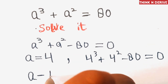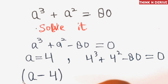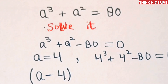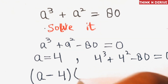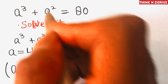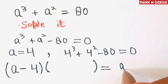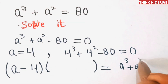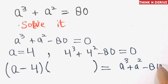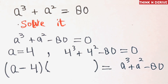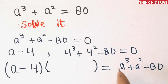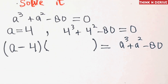Since a = 4 is a solution, (a − 4) is one factor of this equation. Now we need to find the other factor such that when we multiply the two factors we get a³ + a² − 80. One way is to divide this polynomial by (a − 4), but I will approach it by a different method.